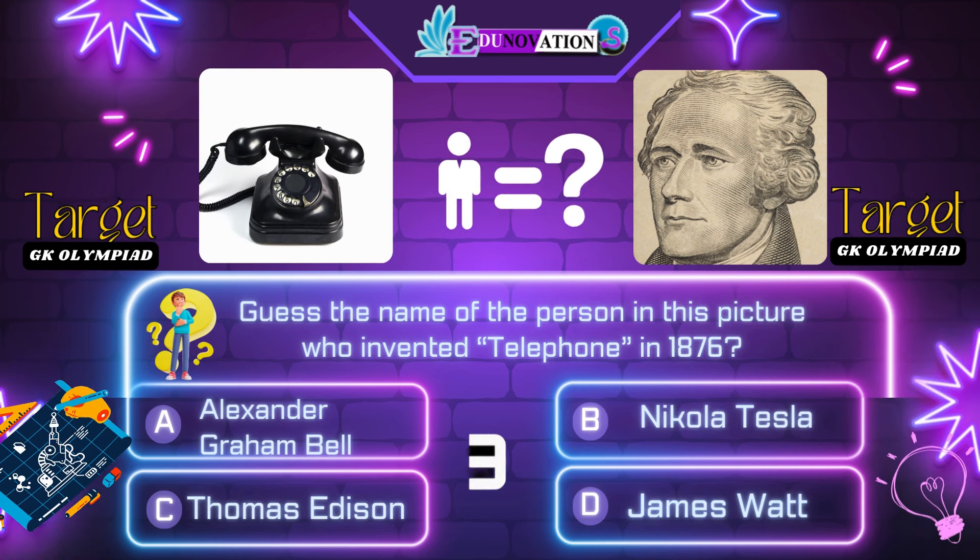Now next question. Guess the name of the person in this picture who invented the aeroplane in 1903. Your options are: A. Orville and Wilbur Wright, B. Leonardo da Vinci, C. Henry Ford, D. Carl Benz. Time's up. Correct answer is A. Orville and Wilbur Wright.